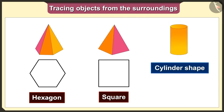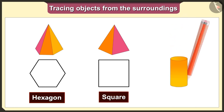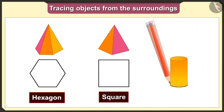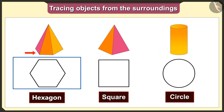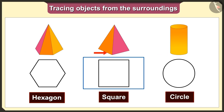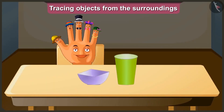This is a cylindrical shape. The base of a cylinder shape is a circle, so we will get a circle shape when we trace the cylinder shape. So when we trace these solid shapes, we will get the shapes hexagon, square and circle according to their bases.